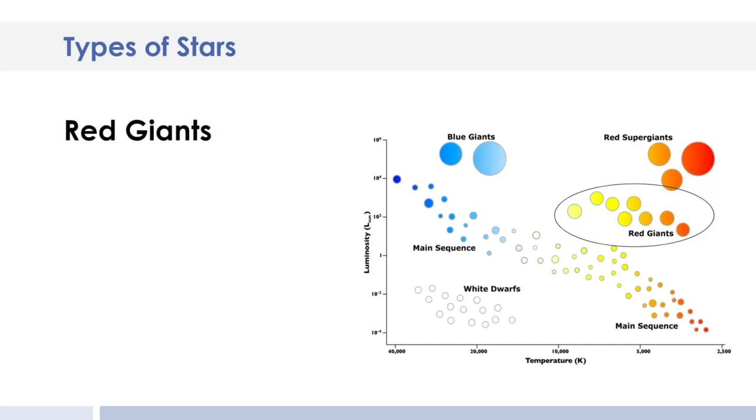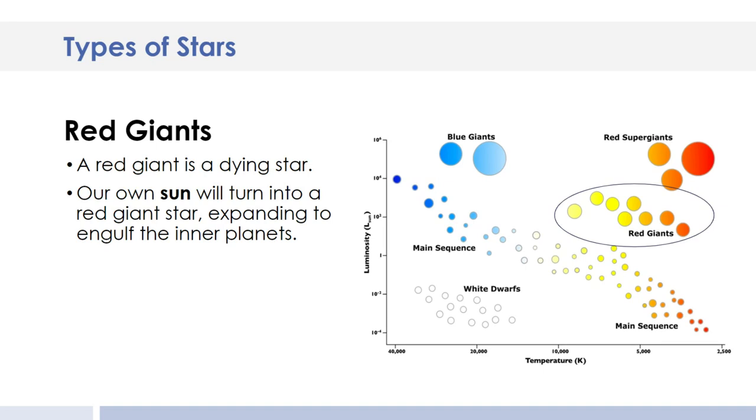Our next group is the red giants. I've got those circled. Red giants are dying stars. Our sun will turn into a red giant. It will expand and engulf some of the inner planets, including Earth. But don't worry, that's over 5 billion years away.